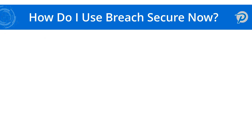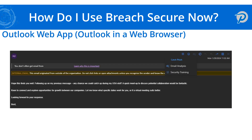For users who use Outlook on the web via outlook.com or office.com, you can also access this tool within any given email by navigating to the catch fish button, which you will see in the banner at the top of the email. From there, once you click it, you'll notice that the two buttons for email analysis and security training show up much the same way as they do in the Outlook desktop app with the exact same functionality.